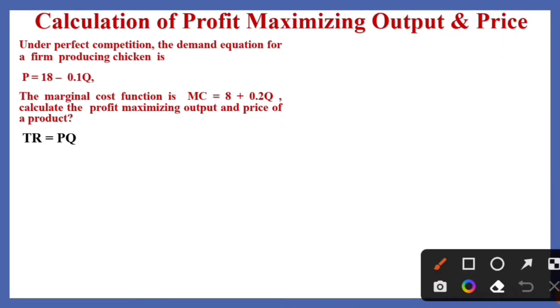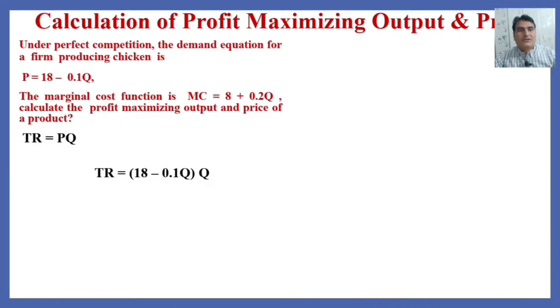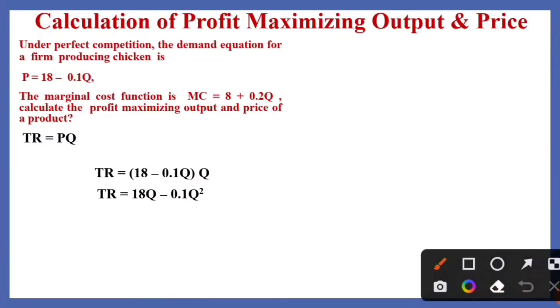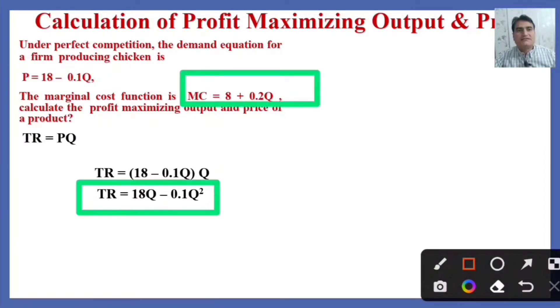So the total revenue is equal to P times Q. We substitute the price equation instead of P and keep the Q the same, so the total revenue will be TR = 18Q - 0.1Q². Here the marginal cost is given, but we have to find the marginal revenue because we know that the firm achieves equilibrium where the marginal revenue and marginal cost are equal.